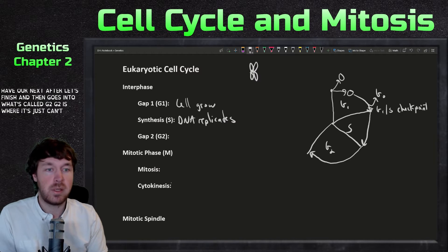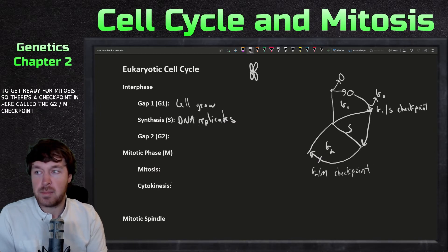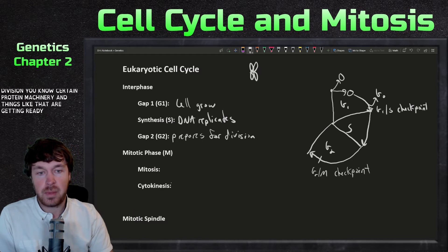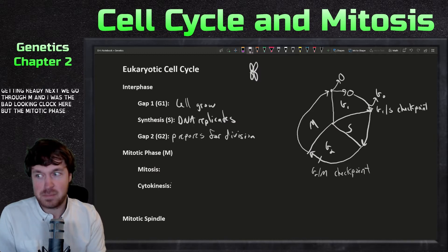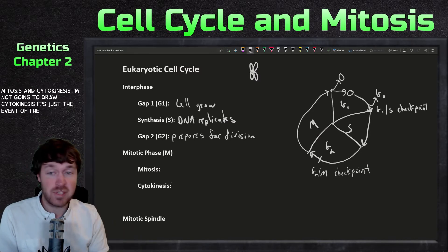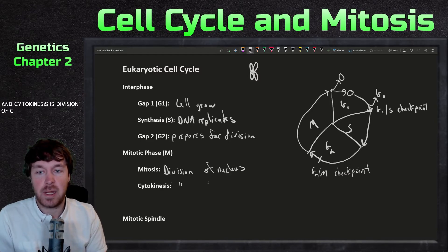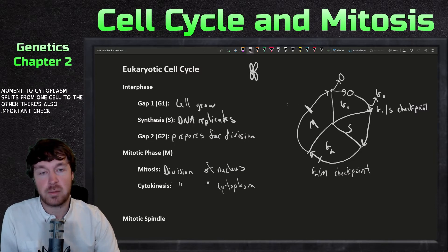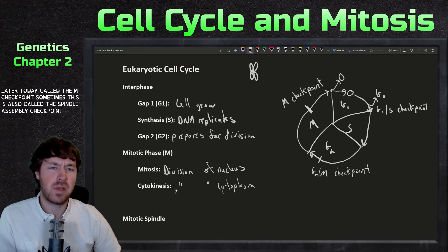G2 is where the cell continues preparing for mitosis. There's a G2/M checkpoint here, and certain protein machinery gets ready for division. Next is the mitotic phase, M, which is broken into mitosis — division of the nucleus — and cytokinesis — division of the cytoplasm. There's also an important checkpoint in M phase called the spindle assembly checkpoint, which we'll discuss shortly.